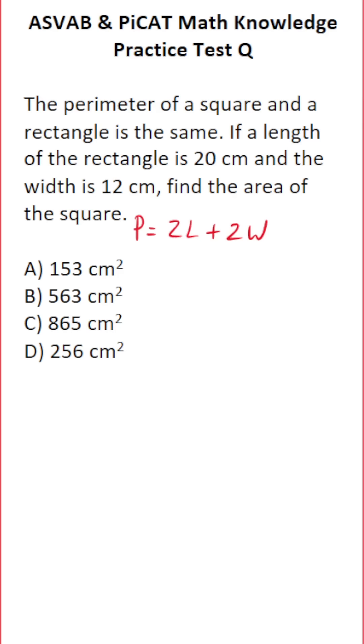We also need to know the perimeter of a square, which is four times its side length S. And the area of a square is its side length squared. So we'll find the perimeter of the rectangle, then the perimeter and side length of the square, and finally the area of the square.